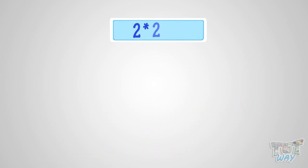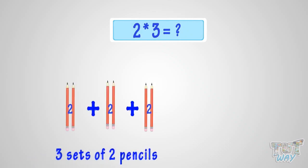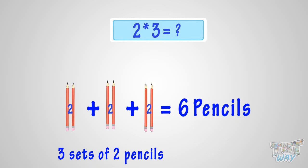What is two multiplied by three? It is the same as three sets of two pencils. So it is six pencils. That is, two multiplied by three is six.